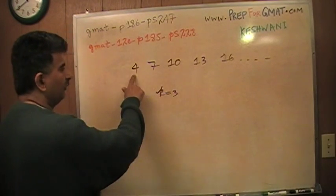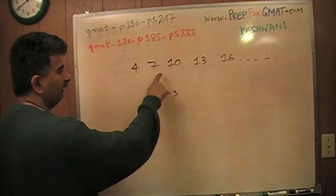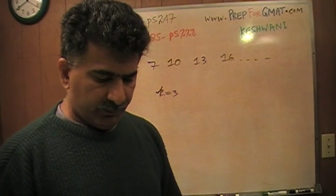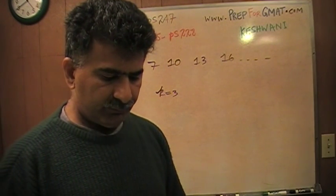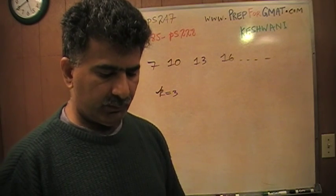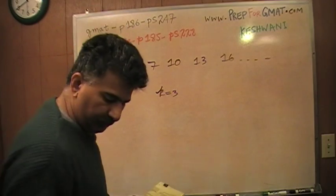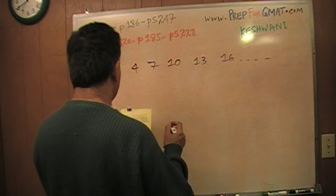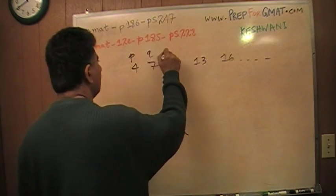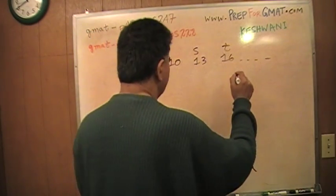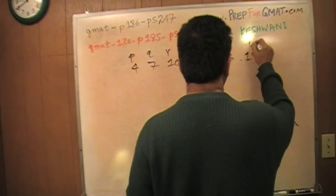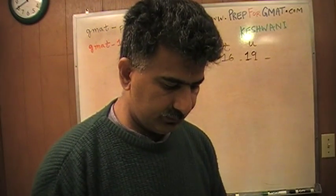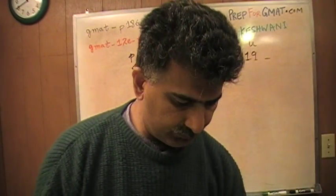So this term equals 4 plus 3, this term equals preceding term 7 plus 3, this term equals preceding term 10 plus 3, and so on. The question is: if the list of numbers shown above is an arithmetic sequence, which of the following must also be an arithmetic sequence? They give you three answer choices. Let's look at the series they give you: P, Q, R, S, T, and U. Just plugging in numbers to see what works.